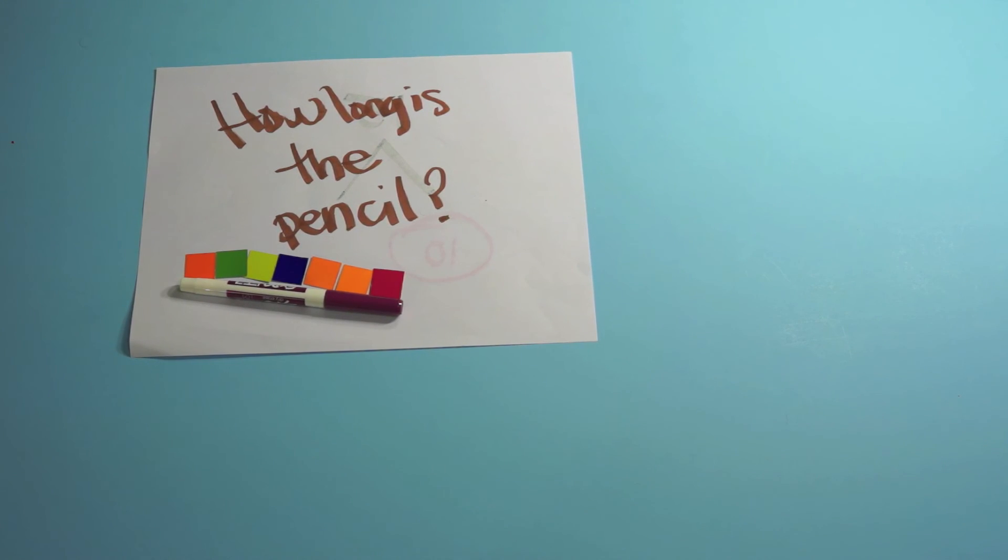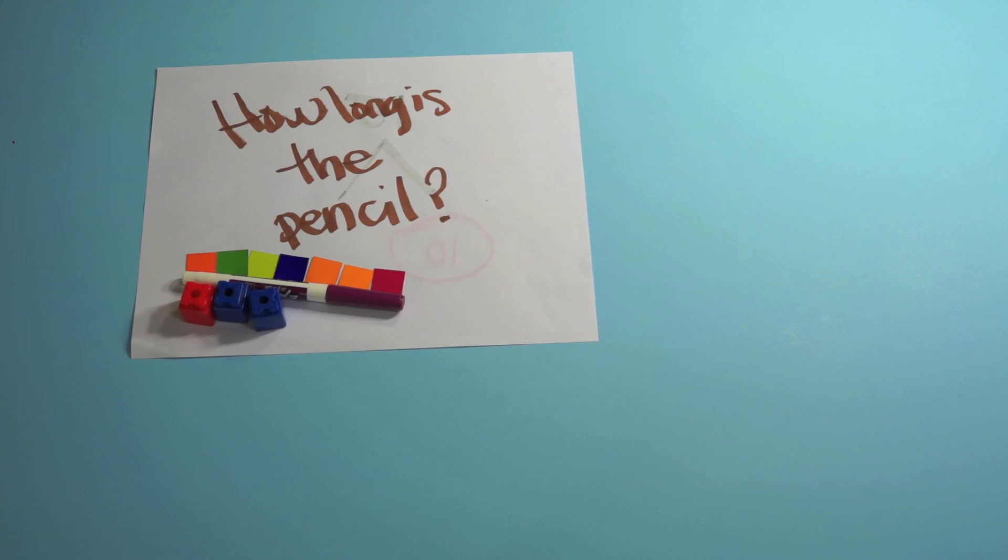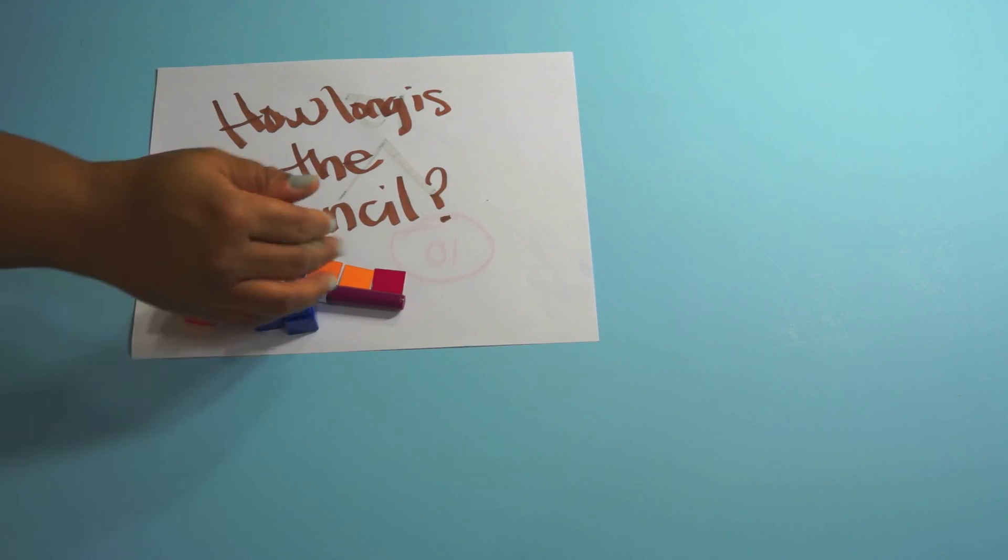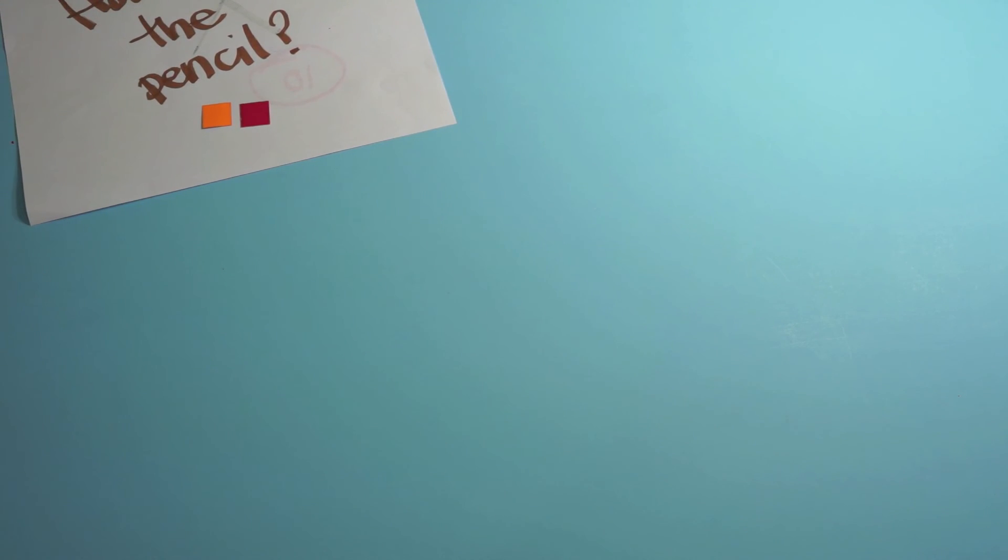So you want to do a lot of things with those mosaics. You could just as well use unifix cubes or snap cubes but this idea that you take an object and you keep repeating it over and over to see how long something is. You just set up a center where they do different things. They might use paper clips, they might use mosaics, they might use unifix cubes.